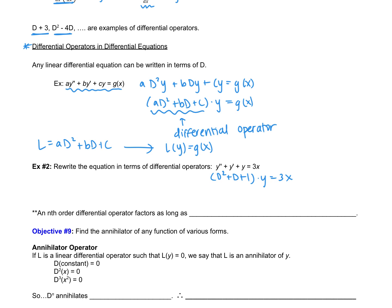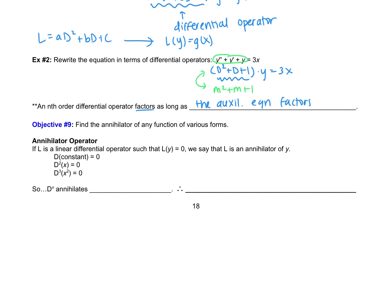Looking at that differential operator, we're often going to want to factor it. An nth-order differential operator factors as long as the auxiliary equation — also called the characteristic equation — factors. So for example, the characteristic equation corresponding to D² + D + 1 would be m² + m + 1. Either they both factor or they both do not. This leads us to what is called an annihilator.